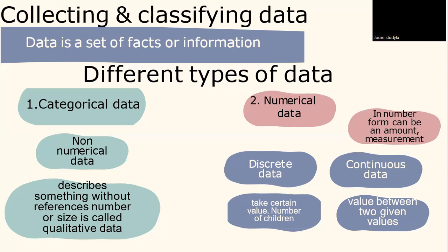Numerical data can be further divided into two groups. One is discrete data and the other one is continuous data. Discrete data can take certain values, for example, like the number of children in a class. Continuous data could take any value between two given values. For example, the height of a person who is between 1.5 meters and 1.6 meters tall.